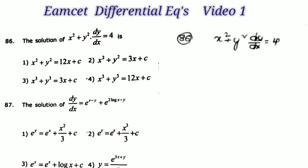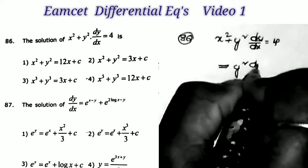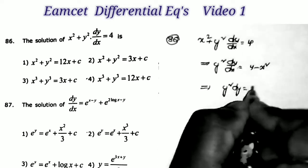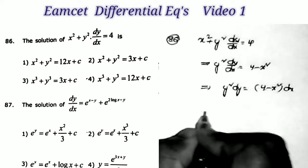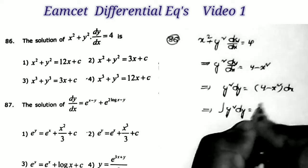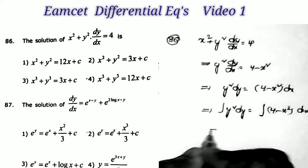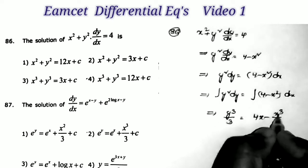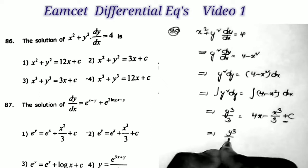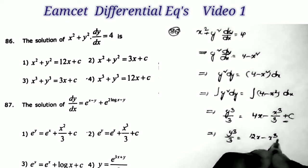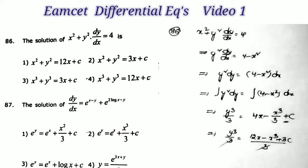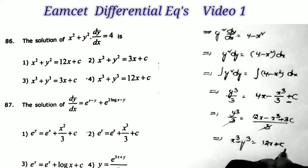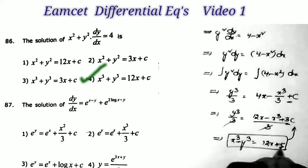Next question, sum number 86: the solution of x²+y² into dy/dx = 4. That is y²·dy/dx = 4−x², so separating variables: y²dy = (4−x²)dx. Applying integration: y³/3 = 4x − x³/3 + c. Doing LCM on the right: y³/3 = (12x − x³ + 3c)/3. Therefore the answer is x³ + y³ = 12x + k, which is the last option.